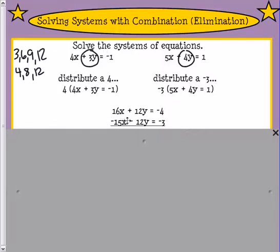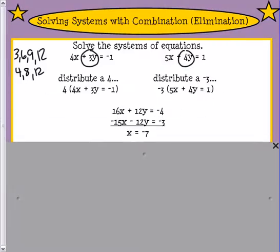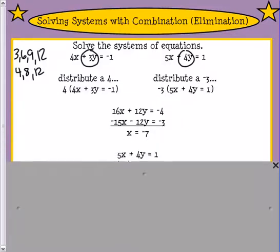So 4 times 4 is 16. So that's 16x plus 12y equals negative 4. Distribute the negative 3 to the 5, negative 15x, 3 to the 4, negative 12y, and the 3 to the 1, negative 3. So over here we get just x equaling negative 7. That worked out nice, didn't it?